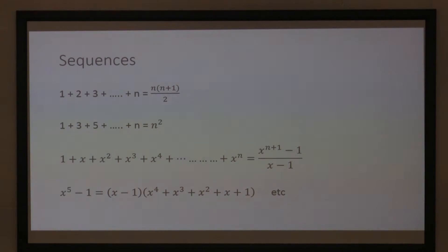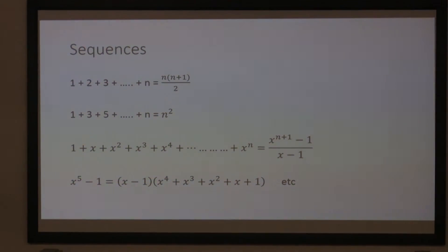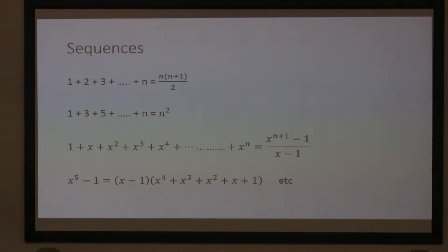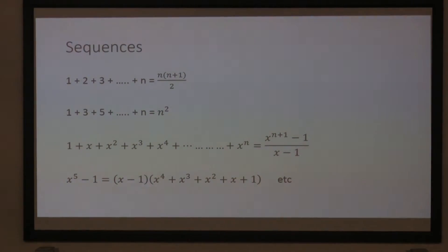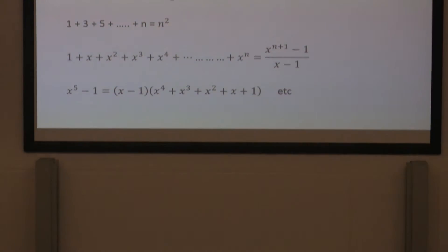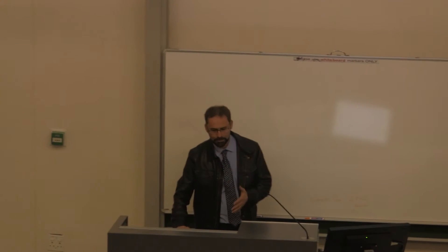Well, x to the n plus 1 minus 1 over x minus 1. But now, if you rearrange that formula, you get this nice sort of factorization formula. So, for example, if you want to factorize x to the 5 minus 1, x minus 1 will always be a factor of x to the n minus 1. And then, you get that sort of sequence of powers of x in the second bracket. So, that bottom thing there is a very useful factorization technique. Okay? Just by rearranging the statements above. All right. All good stuff to remember.